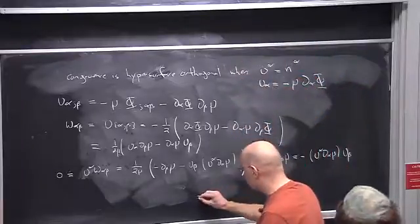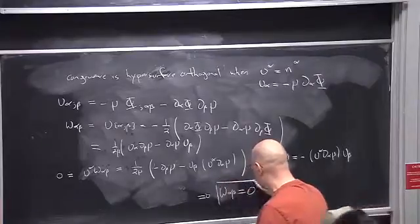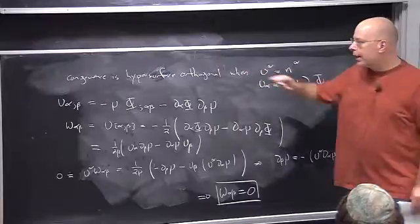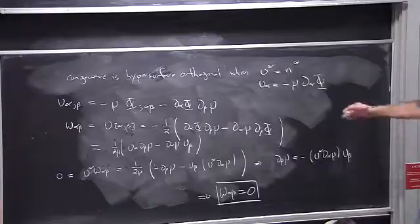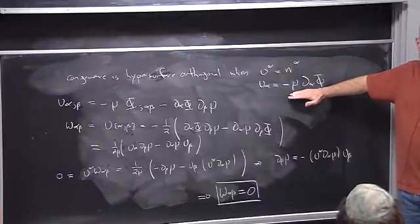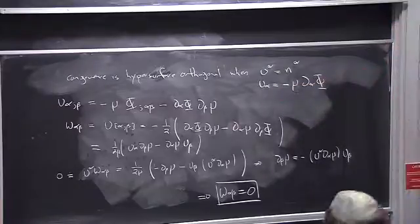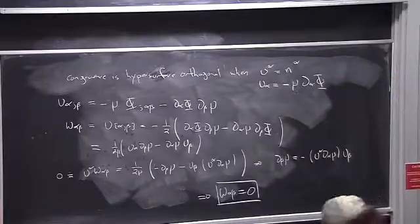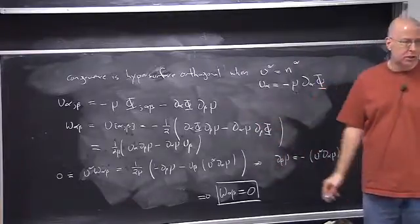So as a consequence, ω = 0. The chain of logic is: we state that we have hypersurface orthogonality, which imposes the condition that u_α is proportional to a gradient, which means the normal vector is aligned with the time-like vector field of the congruence. Once we have that, it's a simple computation showing that omega must vanish — it's a direct consequence.